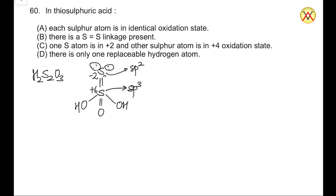Looking at Option A — that each sulfur is in an identical oxidation state — we clearly found that one sulfur has an oxidation state of +6 and the other has an oxidation state of −2. So Option A is incorrect.